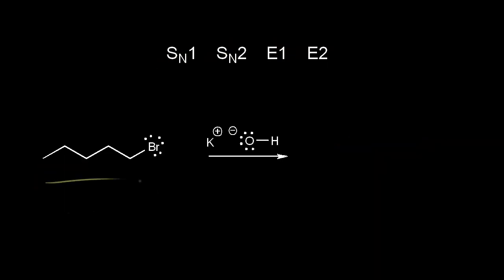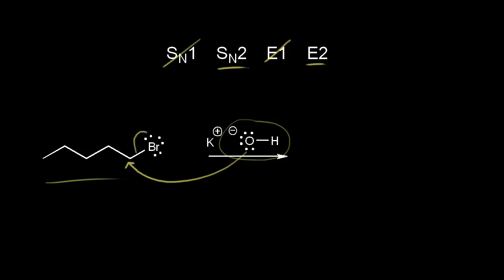For this primary alkyl halide, SN1 and E1 are out, so we're deciding between SN2 and E2. We have potassium hydroxide as our reagent. The hydroxide ion is a strong nucleophile and a strong base. For a primary alkyl halide that is unhindered, the SN2 reaction is going to win out. A small nucleophile can attack this carbon at the same time these electrons come off onto the bromine to form our bromide anion.